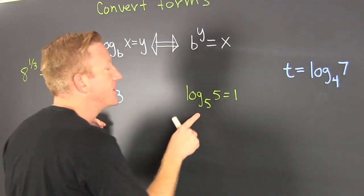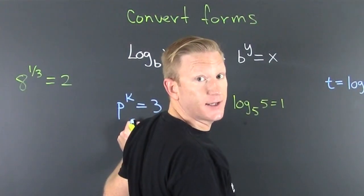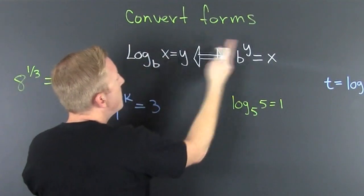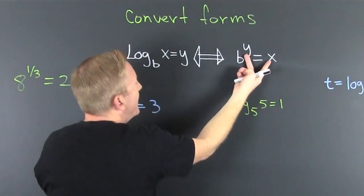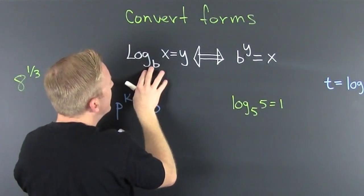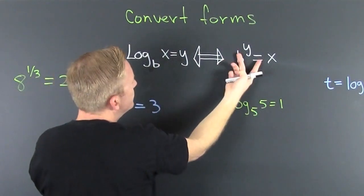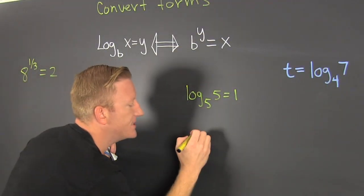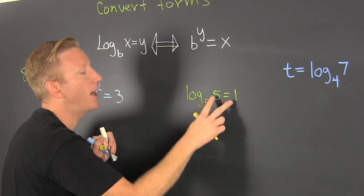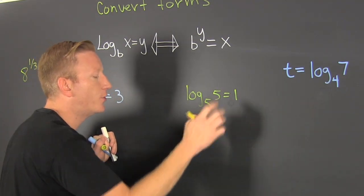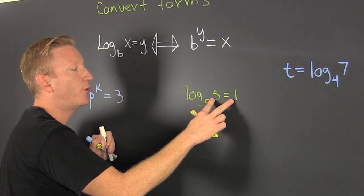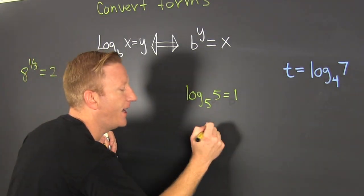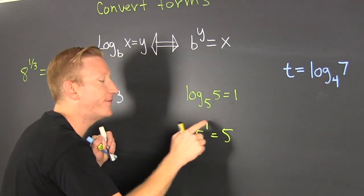As long as the log is on the left, you switch the x's and the y's. So when I'm looking at this, I see that my base is 5, and I go — 5 to the first is 5.